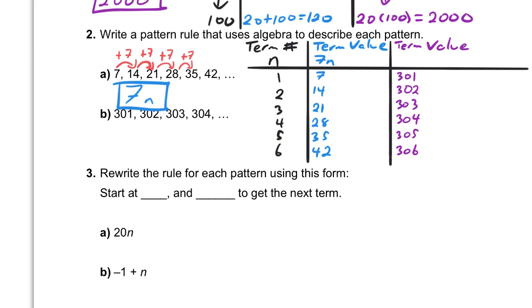Putting this into the table of values doesn't help us quite as much because I don't know my 301 times tables. But I know that 1 times 301 is 301, but 2 times 301 is not 302. That would be 602, right? So it can't be just 301 times n like it was in right here. It can't just be this first value times this first number.